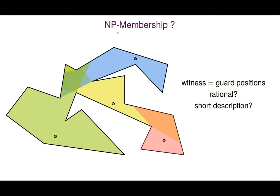One of the open problems in the art gallery problem was: is this problem in NP? For NP membership, you would think to use the guard positions as a witness, but then there's a problem — can the guard positions always be described by rational numbers, and if so, can we give a bound on the description complexity of these rational numbers, like how many bits we need to represent the numerator and denominator?